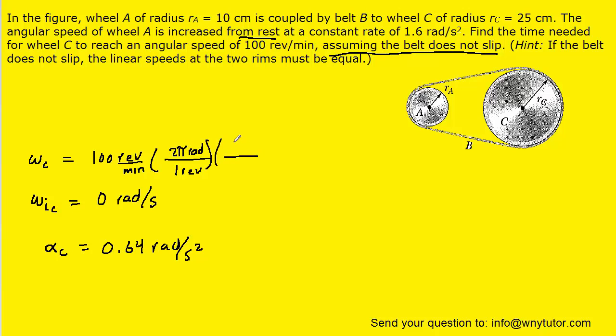And then of course one minute is 60 seconds. And if we set up our conversion in that manner the minutes are going to cancel and the revolutions are going to cancel. And that's going to leave us with radians per second. And it turns out to be 10.5 radians per second.